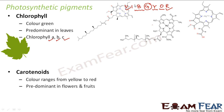Carotenoids absorb blue, indigo, and violet — similar colors — so the colors transmitted are red, orange, or yellow. Both carotenoids and chlorophyll are present inside the plant. The part where chlorophyll is more appears green; the part where carotenoids are more appears colorful — yellow, orange, or red. So the presence of carotenoids is responsible for the colors of different vegetables, fruits, and flowers.